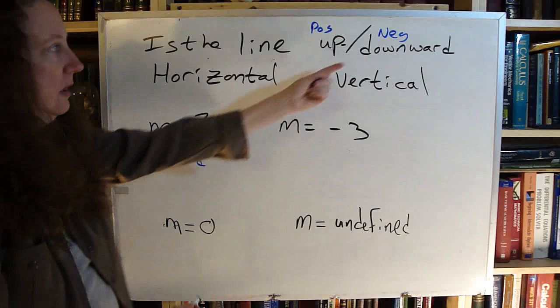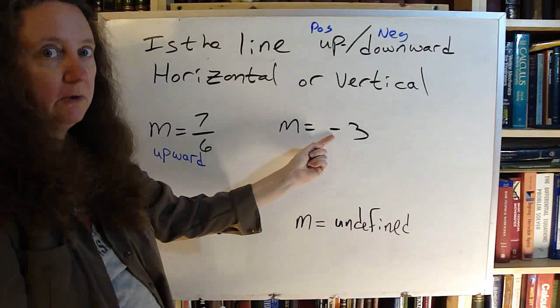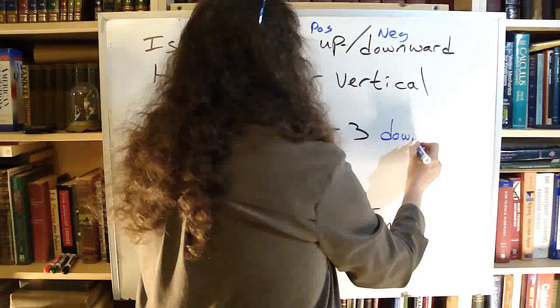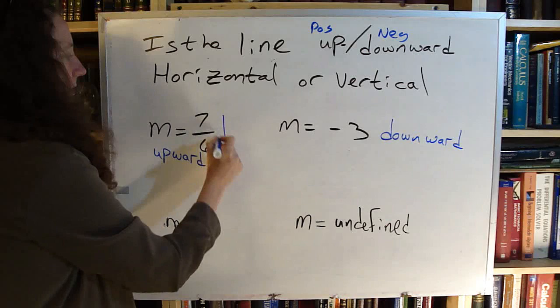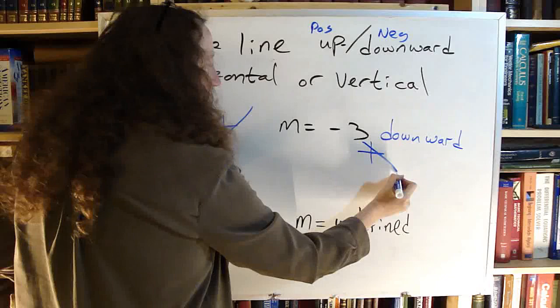Negative. Downward. That's a negative number right there. So this line will be downward. So if I were doing a graph of it, this one would be going up somehow, and this one would be going down somehow.